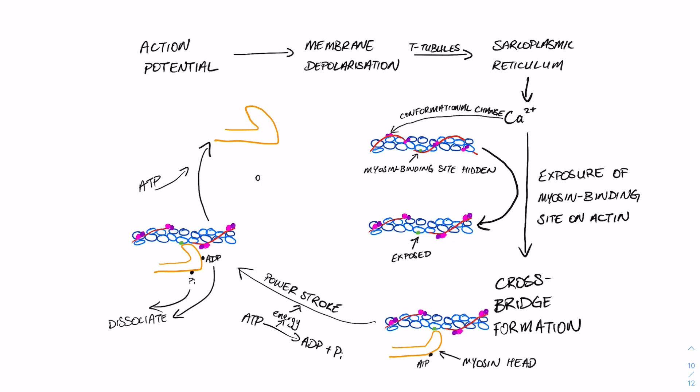And what happens is a nearby floating ATP is going to bind that myosin head, causing two things to happen. So currently, when it's already been pulled back, that is in the low energy state because energy has already been expended.